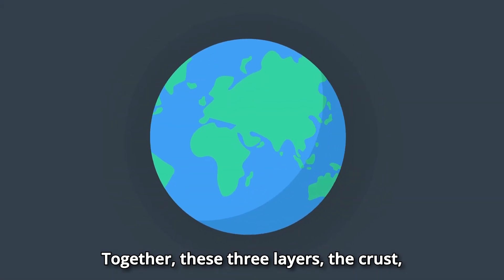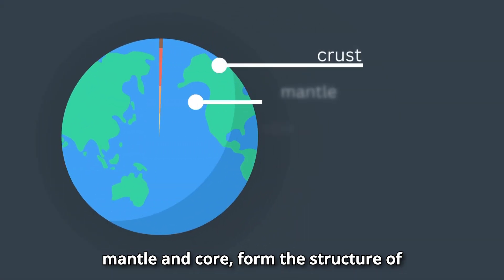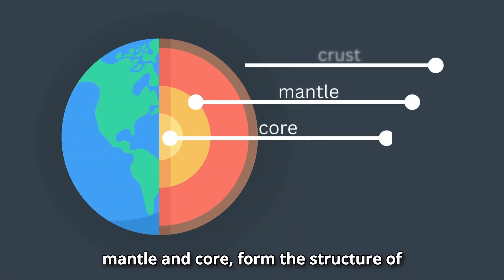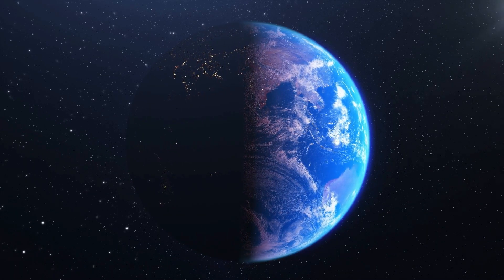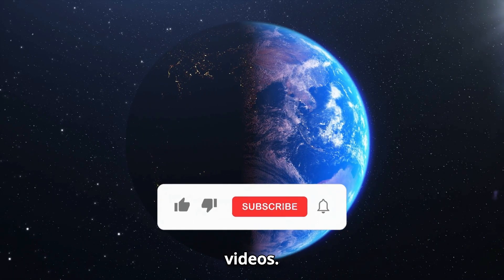Together, these three layers — the crust, mantle, and core — form the structure of our planet and shape the Earth as we know it.